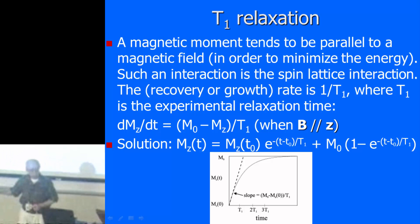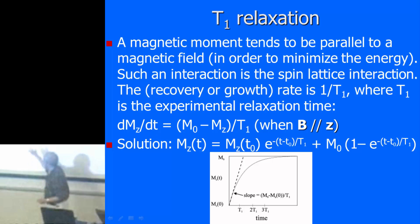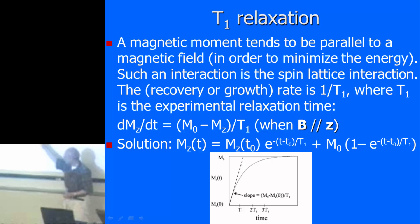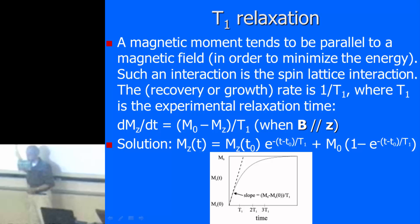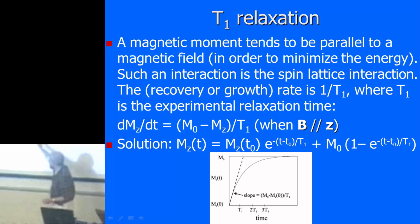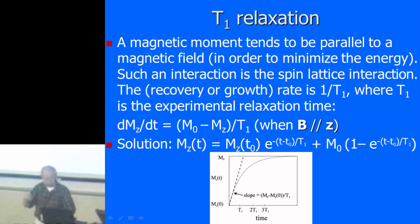Looking at the structure of the T1 equation: when T equals T0 at the starting point, you get zero magnetization. When time becomes infinite, you recover full magnetization — that's the equilibrium magnetization. We'll come back to this when we look at actual numbers from tissues.